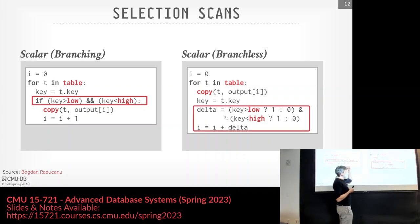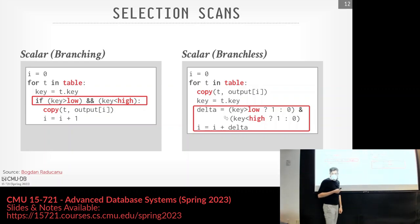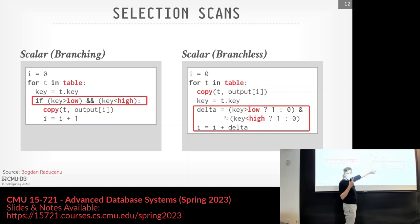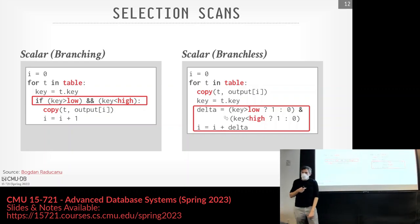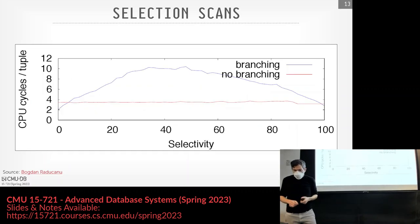We can rewrite this simple sequential scan without any branches. Now we always copy the tuple into our output buffer. Then we grab the key we need and do two ternary clauses — if the key is greater than low value, it's one, otherwise zero; and if the key is less than high value, one or zero. By ANDing those two together, that gives us a delta value that tells us whether we should increment the offset into the output buffer by one. If the predicate doesn't evaluate to true, delta is zero and we come back around and overwrite the last thing we copied. There's a little extra work outside the for loop to handle the last element.